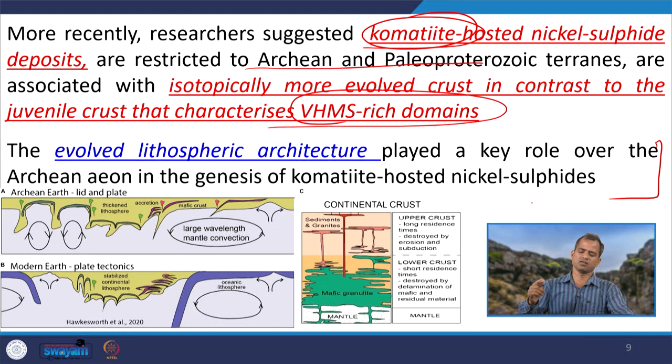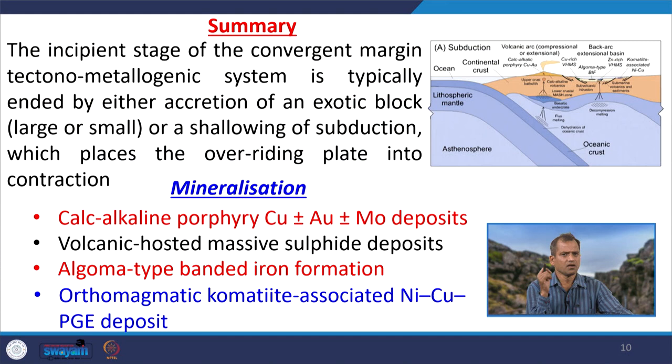Researchers have suggested that komatiite-hosted nickel sulphide deposits restricted to Archean and Paleoproterozoic terrains are associated with isotopically more evolved crust, in contrast to the juvenile crust characterized by VMS-type deposits. The komatiites are associated with more evolved, rigid-type crust that was thin at the continental margin. This evolved lithospheric architecture played a key role in the Archean genesis of komatiite-hosted nickel sulphide deposits.